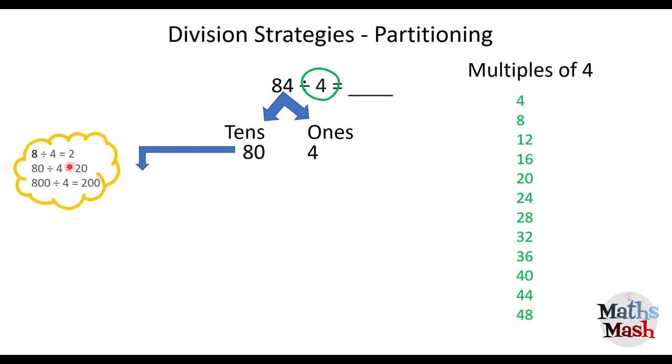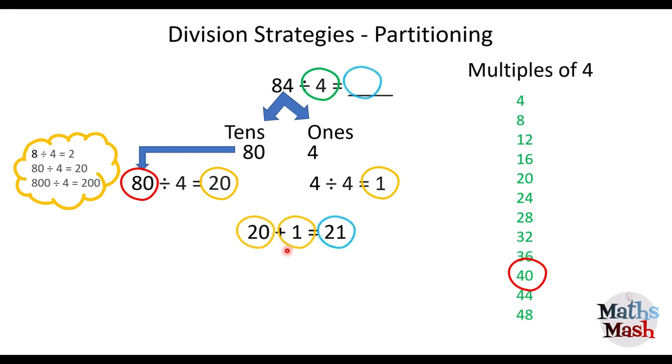And you can see that I've got my 80 here and my 4 here. And I'm going to just think, well, 8 divided by 4 is 2. So that means that 80 divided by 4 must be 20. So I'm going to write 80 divided by 4 equals 20. And you can see my 80 there is double 40, which is 10 times 4 in the multiples of 4. And 4 divided by 4 is 1. So I take my 20 and my 1, I add them together, that gives me 21. So 84 divided by 4 is 21.